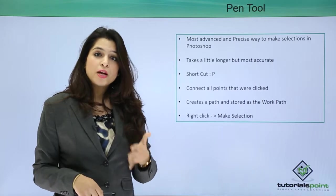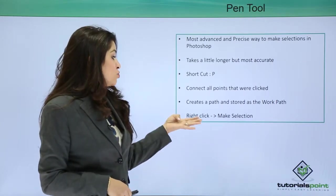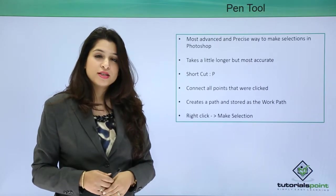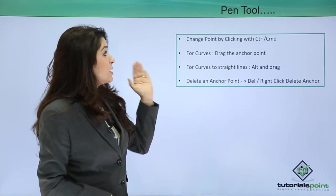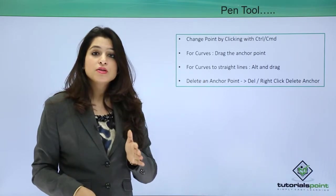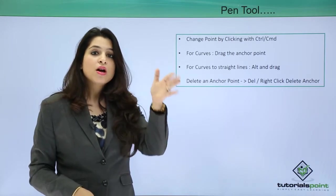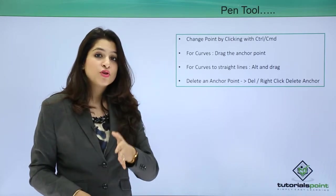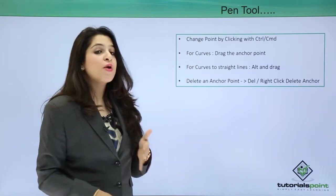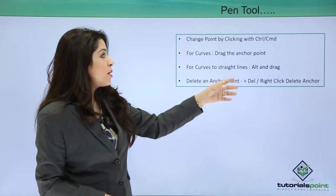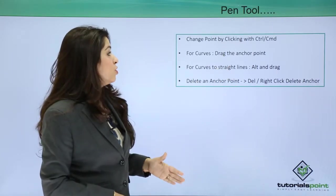When you click on the path panel, you can see the path that was created using the pen tool. When you right-click on your path you can create a selection. The pen tool works by clicking around your image or subject to create a path. The points you have made can be changed by clicking on them with Control or Command pressed.